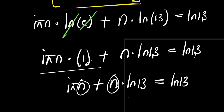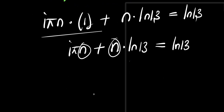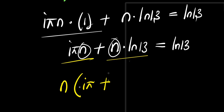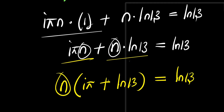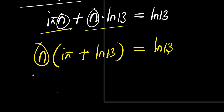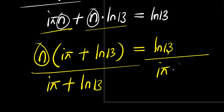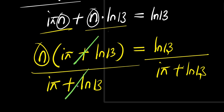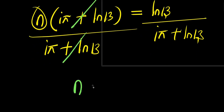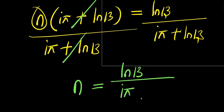We have n in both terms, so let's factor that out. We get n times the quantity i times pi plus natural log 13, equals natural log 13. To isolate n, we divide both sides by i times pi plus natural log 13. So we have n equals natural log 13 divided by i times pi plus natural log 13. This is our answer for n from the first approach.